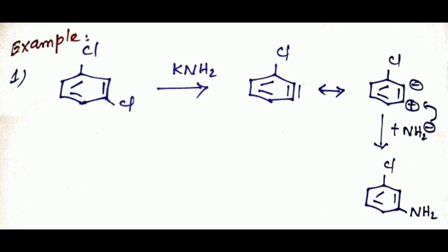First example: meta-dichlorobenzene. Here, Cl is in the Z position and is an electron withdrawing group. So the ortho position hydrogen is removed. In the first step, the elimination process removes the ortho position hydrogen while Cl is in the meta position, forming benzyne as the intermediate.